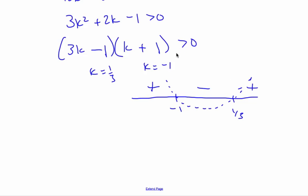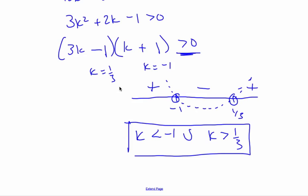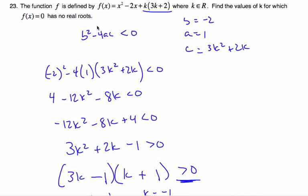And I'm looking for now positive values to make this positive. So that means k is less than negative 1, not equal, because there's no equal sign. Union k is bigger than 1 third. And these are the values of k to make it have no real roots.